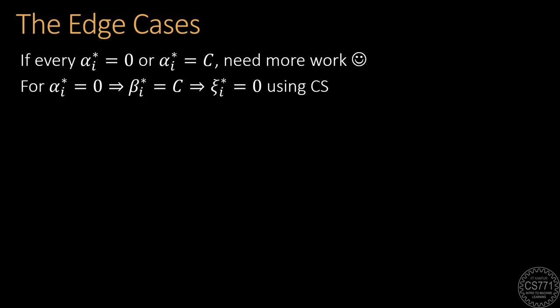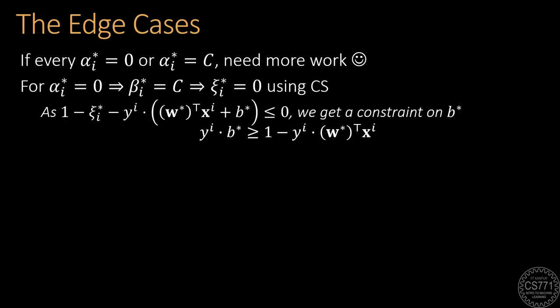If a certain alpha*_i value is equal to 0, we know that the corresponding beta*_i value must be equal to C. Using complementary slackness now tells us that the corresponding slack term xi*_i must be equal to 0. This allows us to eliminate xi*_i from this constraint, giving us a constraint on b*.